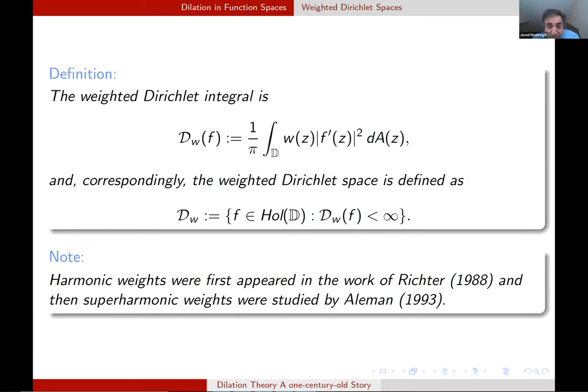But when we go to the weighted Dirichlet spaces, the story is a bit different. We put a weight here and we call it D_w. It's not just for the desire to generalize something. There is an important theorem of Beurling classifying the invariant subspaces of the shift operator on the Hardy space. The same question makes sense in other spaces. And people started to think about the shift on the Dirichlet space. And Richter observed that if you want to do that, you really need to introduce weighted Dirichlet spaces. And for the harmonic weight, I mean, he initiated the studies and obtained the result. And then it was generalized further by Aleman for super harmonic weights.